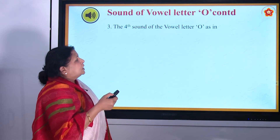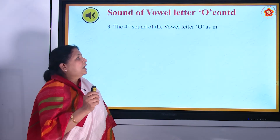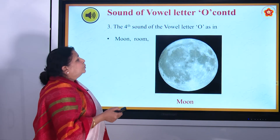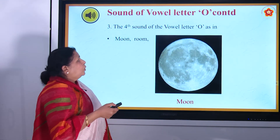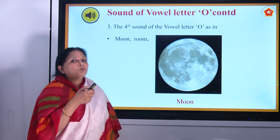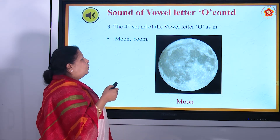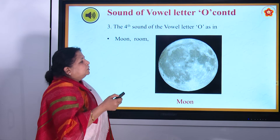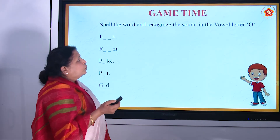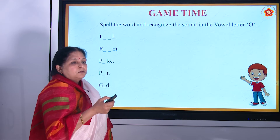The fourth sound of the vowel letter O is as in 'moon' — M, O, O, N — moon. The sound is 'oo'. Then 'room' — R, O, O, M — room. We will now go back and quickly revise the sounds again.